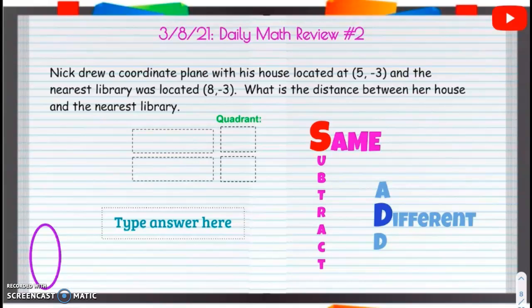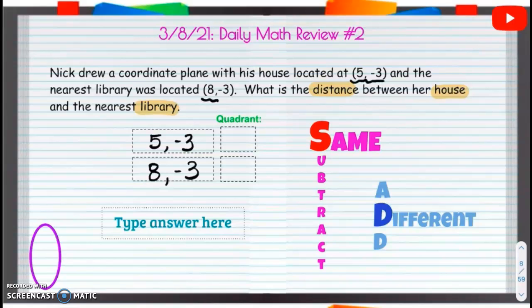So, the distance between the house and the library, we're going to figure that out. First of all, we're just going to write our coordinates. We have 5, negative 3, and then we have 8, negative 3.